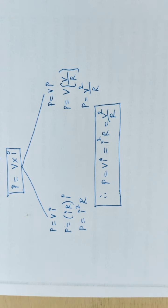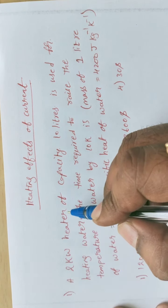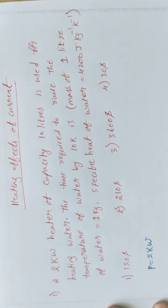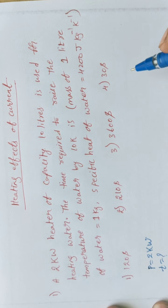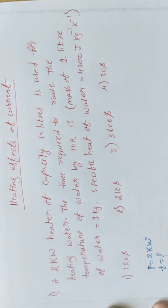Now we go to Problem 1. A two kilowatt heater of capacity 10 liters is used for heating water. The time required to raise the temperature by 10 K is to be found. Power is equal to 2 kilowatts. Volume is equal to 10 liters, and it is given that mass of one liter of water is equal to one kg.